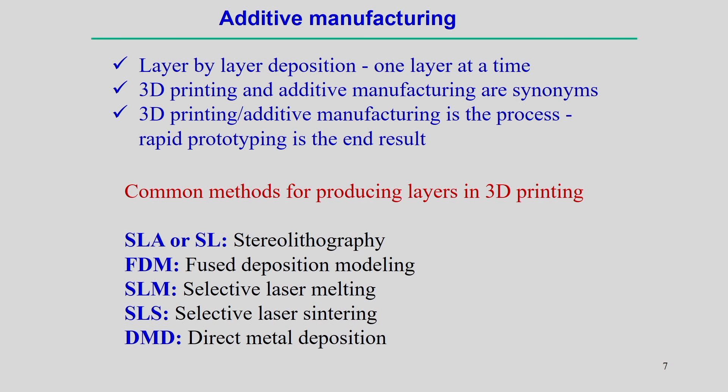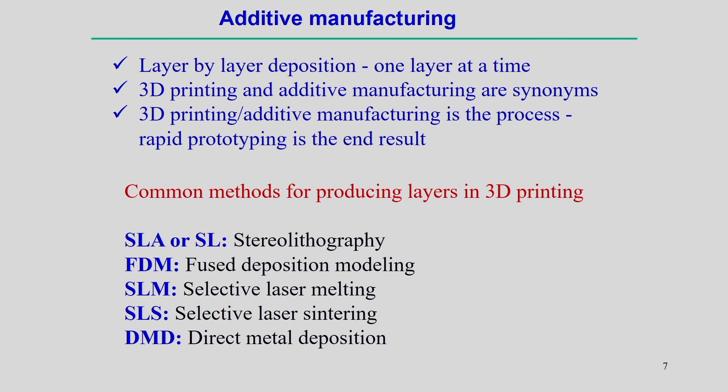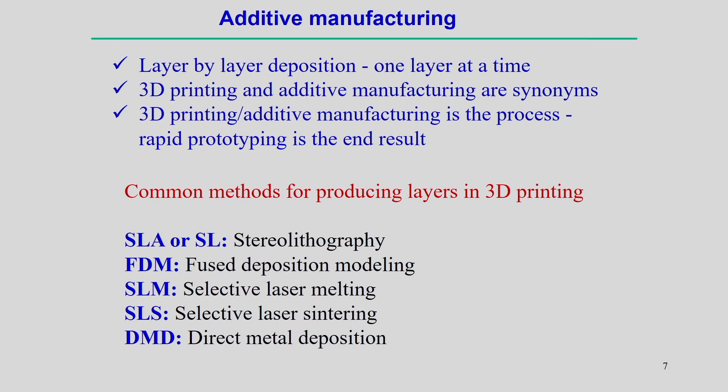In additive manufacturing, layer-by-layer deposition means one layer is processed at a time before moving to the next. 3D printing and additive manufacturing are synonymous — 3D printing is the process and rapid prototyping is the end result. The concept of rapid prototyping led to the gradual development of additive manufacturing processes, so additive manufacturing is the process and rapid prototyping is the result.